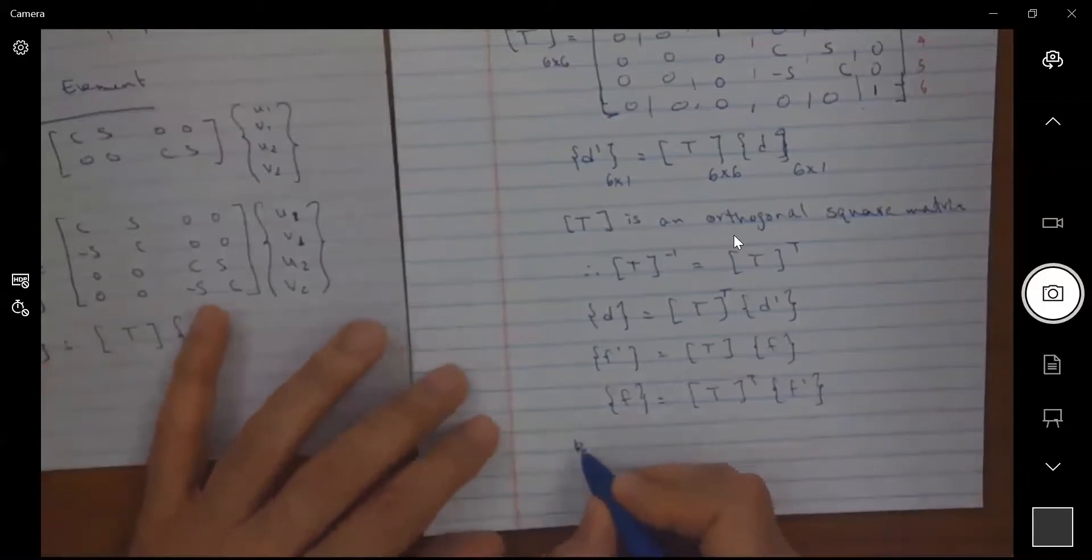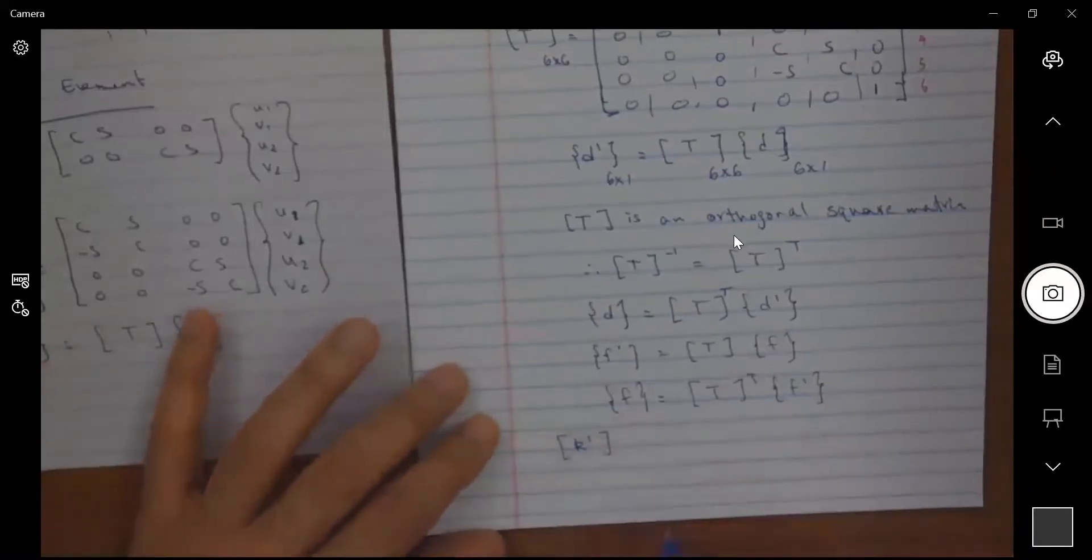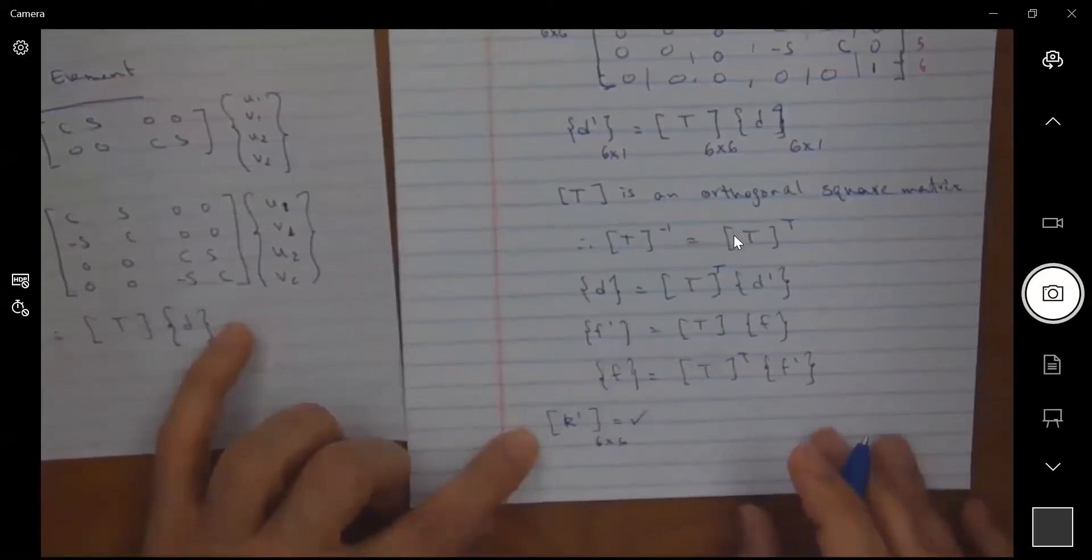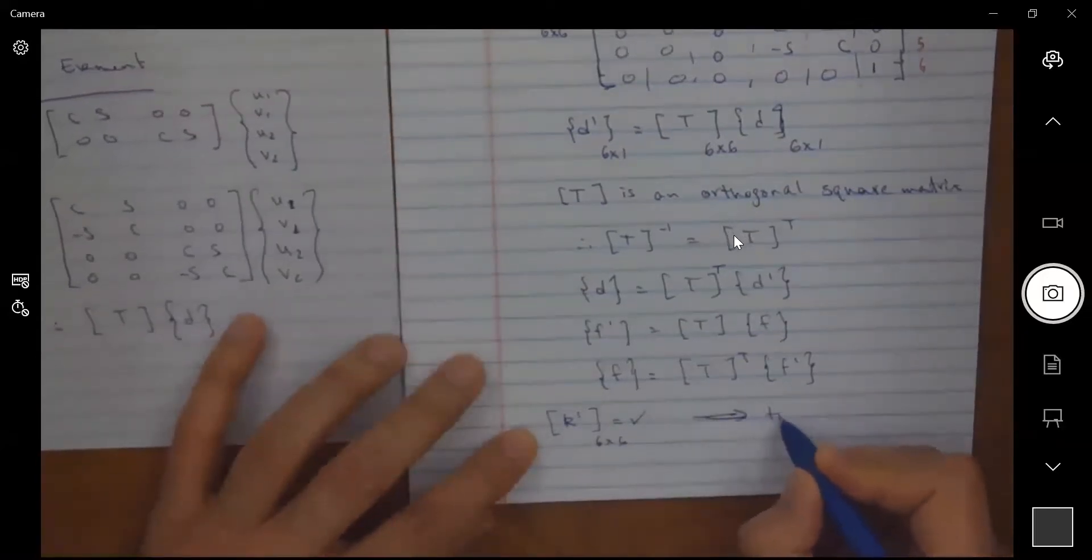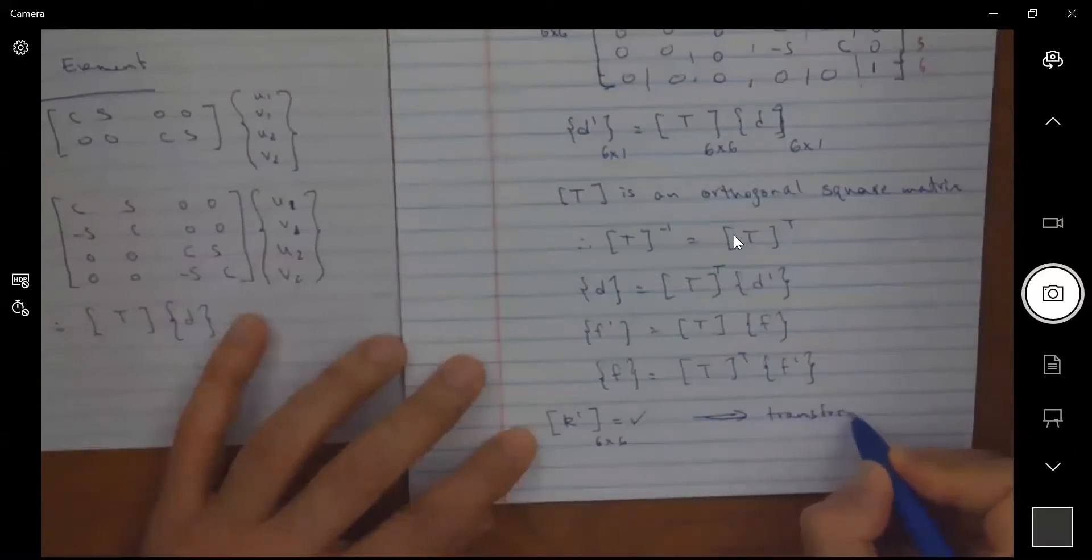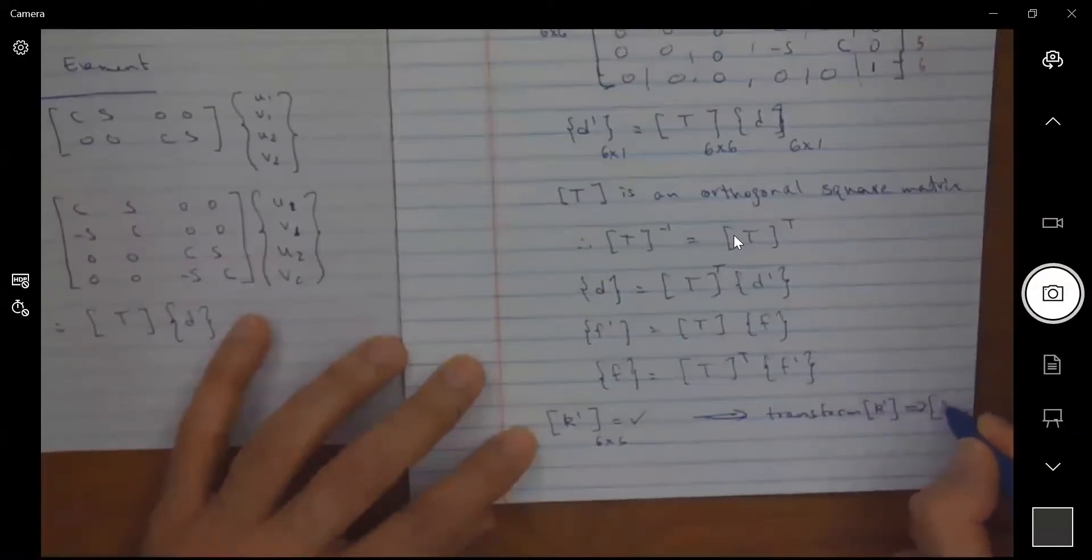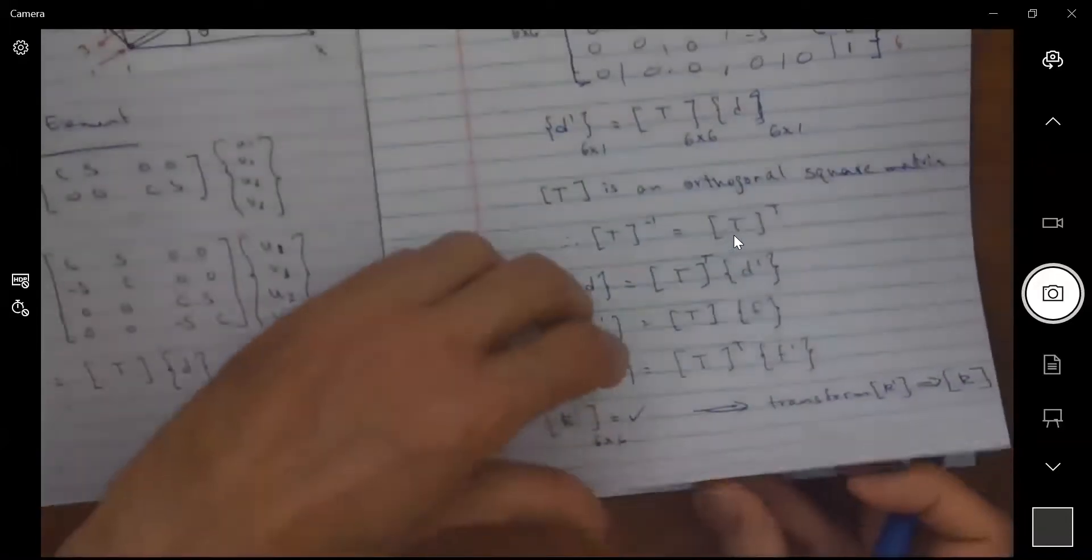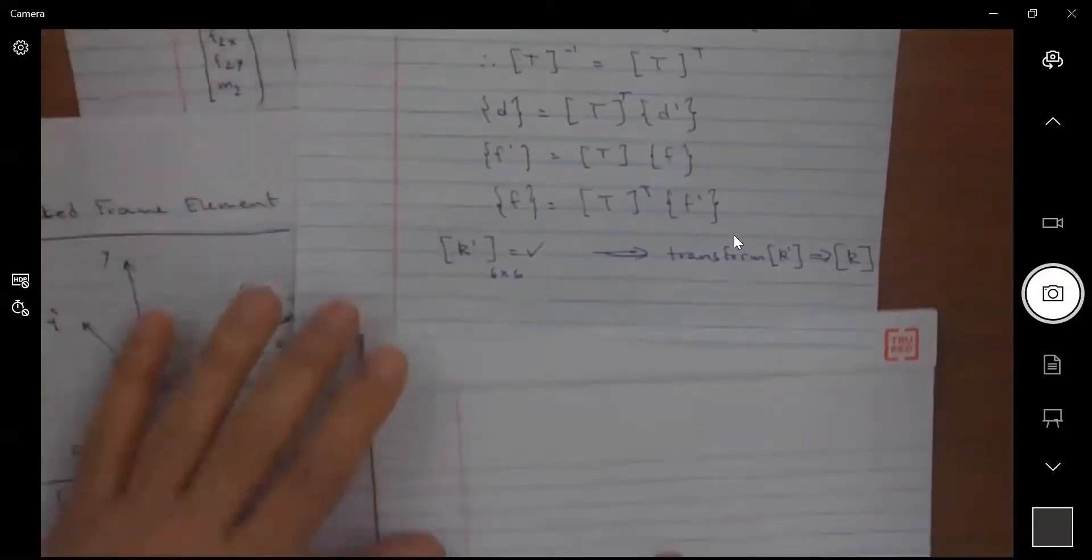Now we have k prime, we found k prime. So we already found this, the six by six stiffness matrix for a frame element with respect to the local axis. We need to transform k prime to find k, the element stiffness matrix with respect to the global axis.